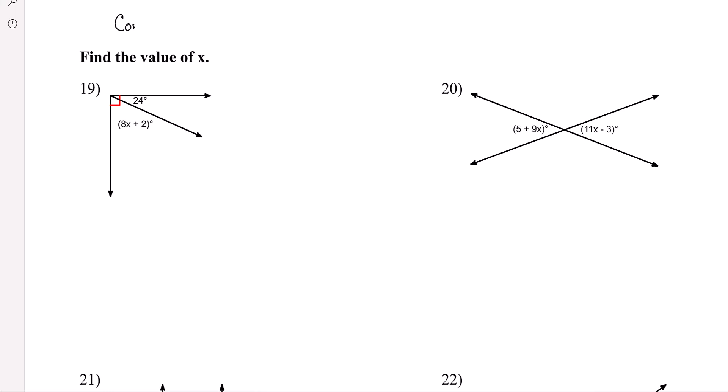So remember, if angles are complementary, they add up to 90 degrees. If they're supplementary, meaning two angles, two angles that together form a right angle are complementary. Supplementary are when they sit on a straight line, supplementary.